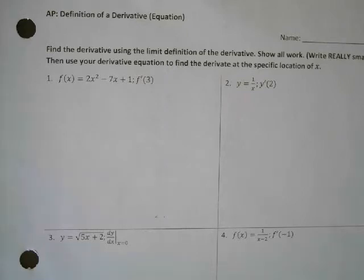Today we actually have two answers. One is the equation where you can get all of the slopes at all the different points, and then one is another answer where you're looking at the specific slope at a specific point.